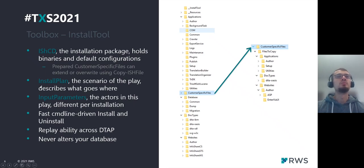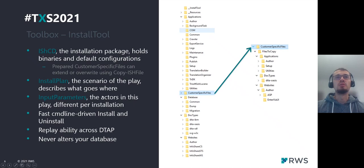The second part is install plan. It's basically a scenario which describes what should go where and how our installation will go. And the third part is input parameters — these are our actors and they define some installation options, for example installation directory or host name.